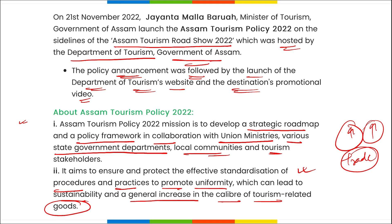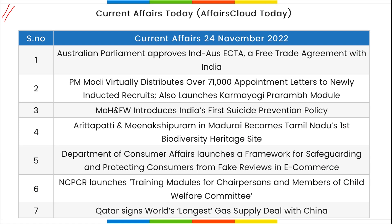This tourism policy aims to develop a strategic roadmap and policy framework in collaboration with union ministries, state government departments, local communities, and tourism stakeholders — ensuring standardization of procedures and promoting sustainability. Tourism growth is important for local economies, as seen in the case of Sri Lanka, whose economy significantly declined partly due to the collapse of tourism during COVID-19.